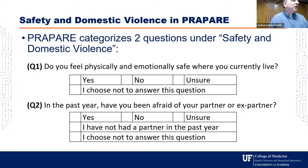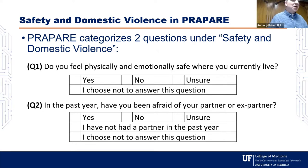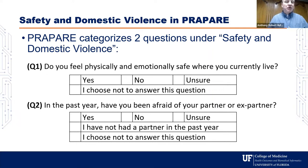PREPARE has two questions under the heading of safety and domestic violence. Question one: do you feel physically and emotionally safe where you currently live? Yes, no, unsure, or I choose not to answer. Question two: in the past year, have you been afraid of your partner or ex-partner? Yes, no, unsure, I have not had a partner in the last year, or I choose not to answer.